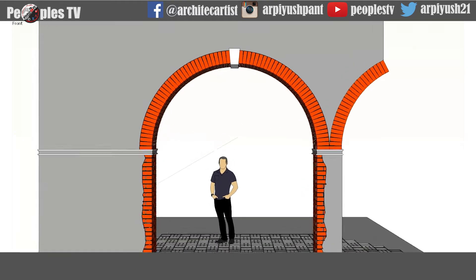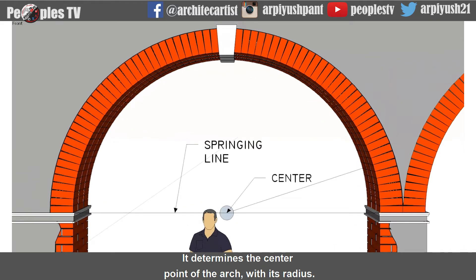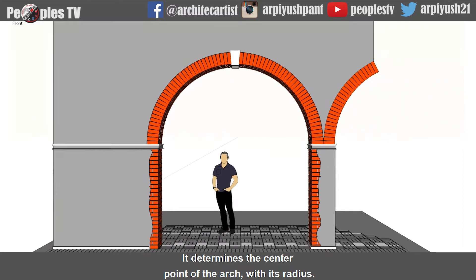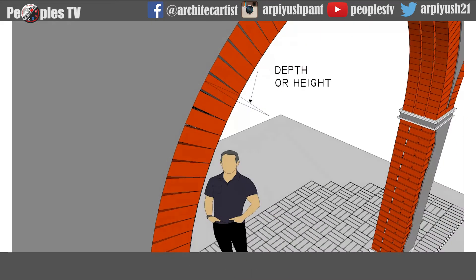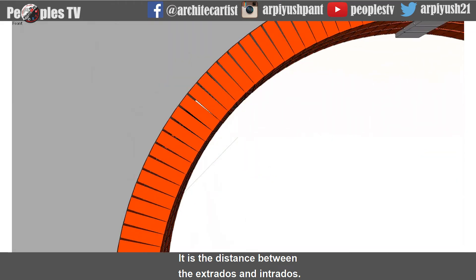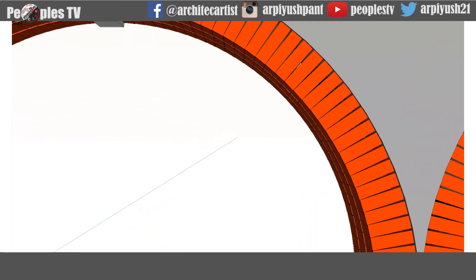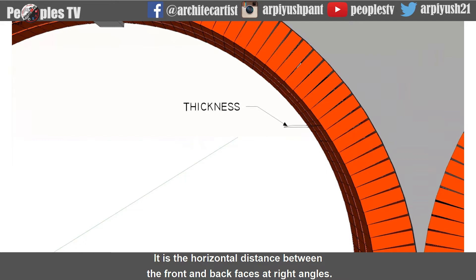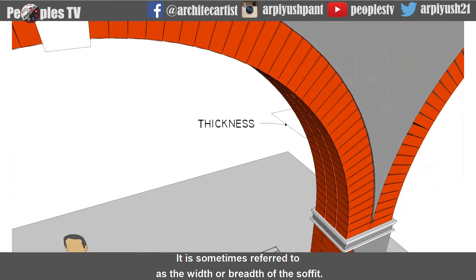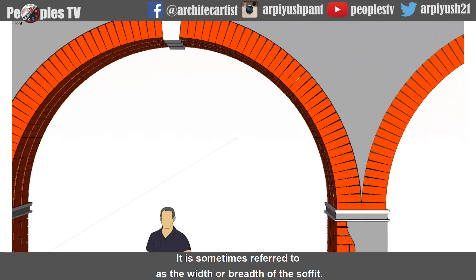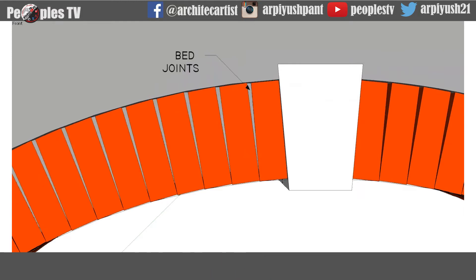Another term is center or striking point — it determines the center point of the arch with its radius. Next is depth or height — it is the distance between the extrados and intrados. Another term is thickness — it is the horizontal distance between the front and back face at right angles, sometimes referred to as the width or breadth of the soffit.